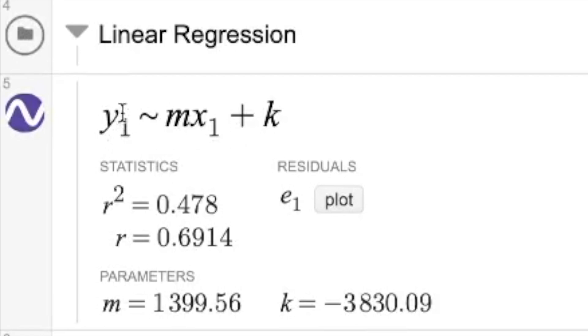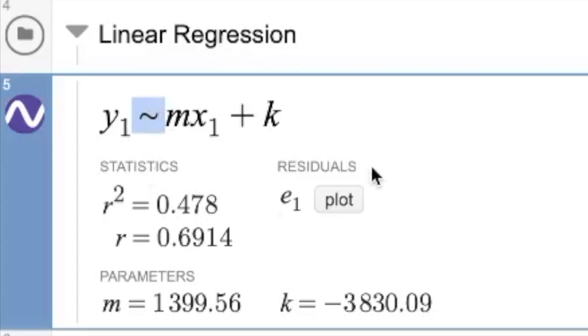We have y1 tilde, which is that kind of squiggly line, y1 tilde mx1 plus k. To get those subscript ones to show up, you can just type y and then a one directly after it and Desmos automatically knows that you want to have that be a subscript.